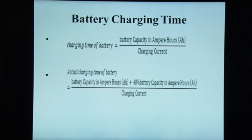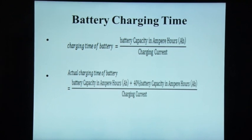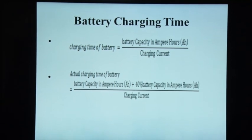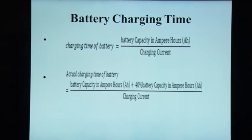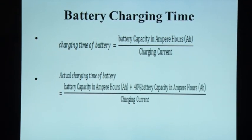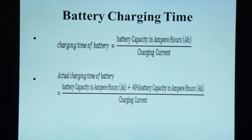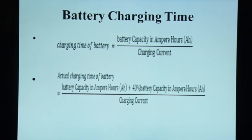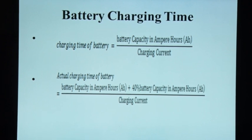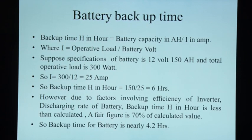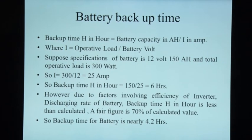Another parameter of interest is battery charging time. Charging time is the ratio of battery capacity in ampere-hours divided by the charging current. The charging current can be provided by the solar panel or by the grid supply. However, there are generally 40% losses during charging, so the actual charging time is: (battery capacity in Ah + 40% of battery capacity in Ah) / charging current.